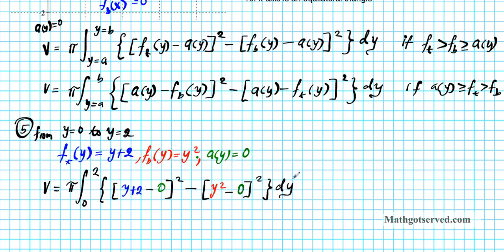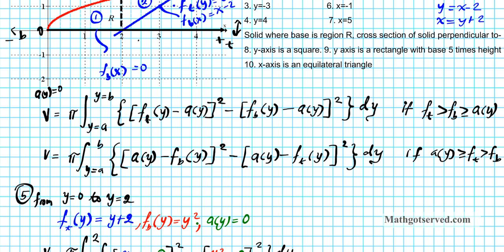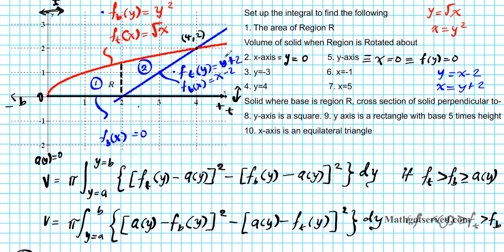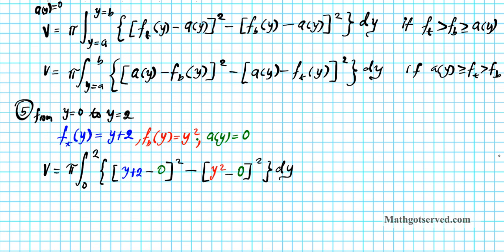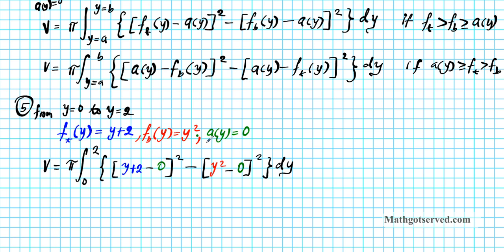Let's verify our expression matches the formula. We have pi — good. Integral from a to b, zero to two — good. Function on the top is y plus 2, minus the axis of rotation 0 — good. Function on the bottom y squared, minus axis of rotation, squared, dy. Excellent.